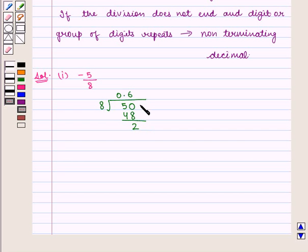So we again put 0 because we have already put a decimal in the quotient. Now 8 into 2 gives us 16, so we get the remainder as 4.